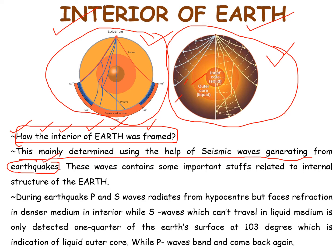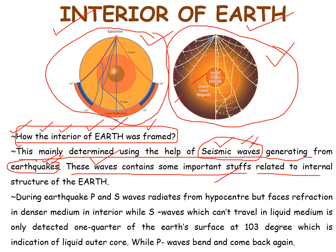The past earthquakes have helped to determine the interior of the Earth. Through the seismic waves, bending, refraction and different kinds of movements of the seismic waves usually help in determining the interior of the Earth. These waves contain some important information related to the internal structure of the Earth. So seismic waves are the main source of determination of the Earth's interior.